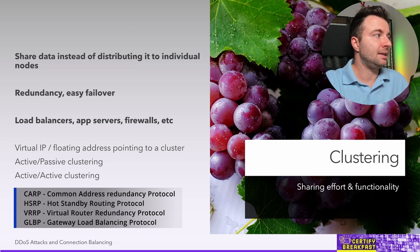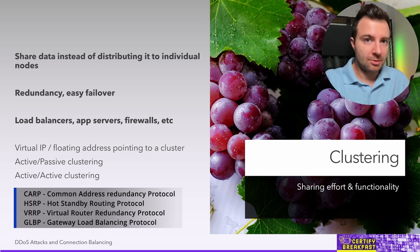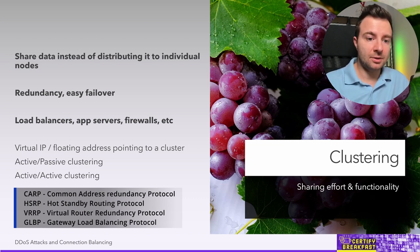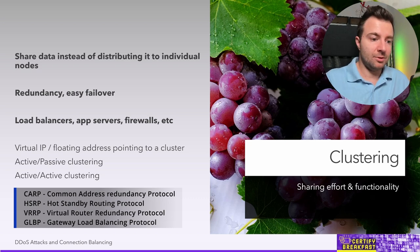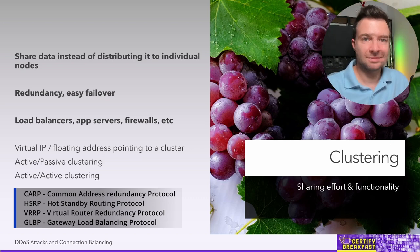Protocols worth mentioning here include CARP (Common Address Redundancy Protocol), and if you've been through Cisco courses, VRRP (Virtual Router Redundancy Protocol), HSRP (Hot Standby Routing Protocol), and GLBP (Gateway Load Balancing Protocol). They all work similarly — they keep track of active cluster members, communicate with each other to decide which one responds to the virtual IP, and ensure only one member is responsible for answering incoming requests.